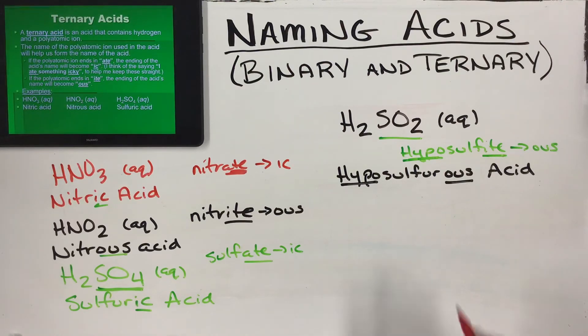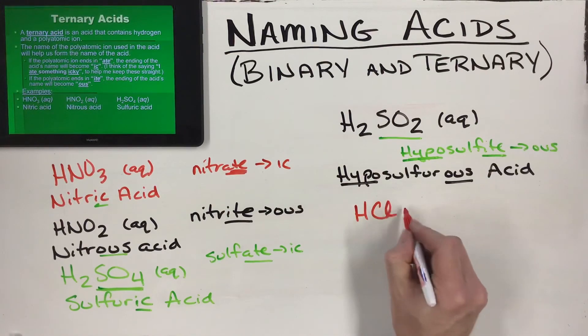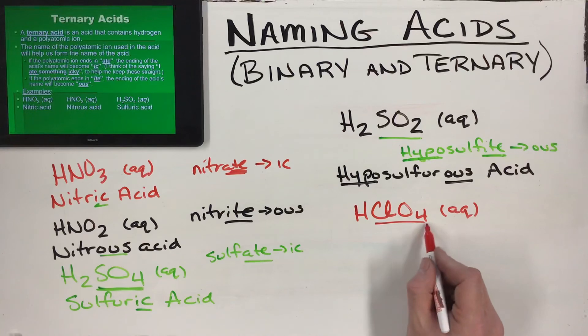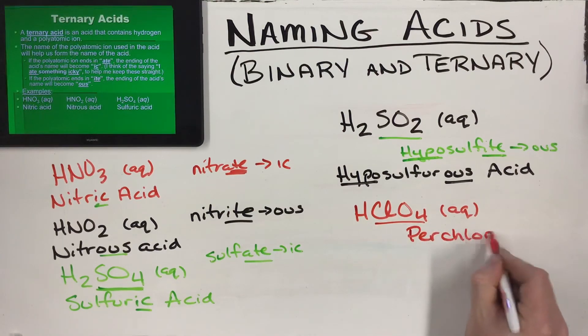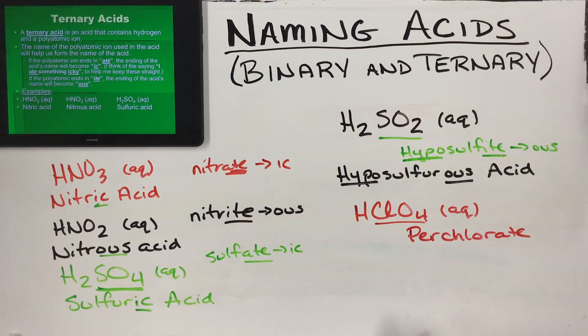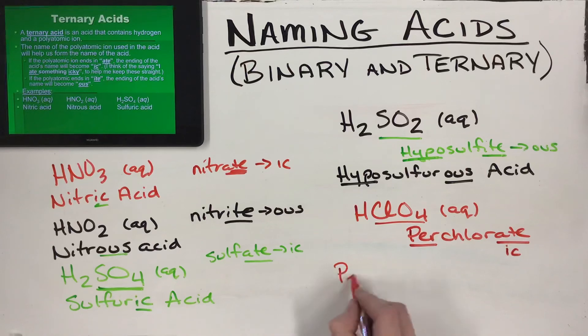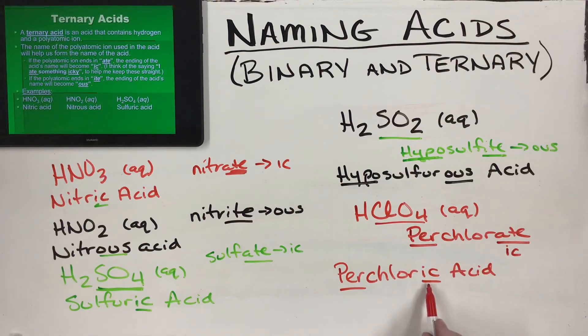We'll do another one here: HClO4. Again, three elements, not using hydro at the beginning - none of these started with hydro. HClO4 - what's ClO4? Well, clam in Nick the Camel has the chlorine polyatomic in it, that's ClO3. Chlorate is ClO3. This is one more - this is perchlorate. So I've got -ate and I've got per, and I know -ate is going to become -ic. So this acid is perchloric acid. The -ate gets replaced by -ic, and the per gets carried down.